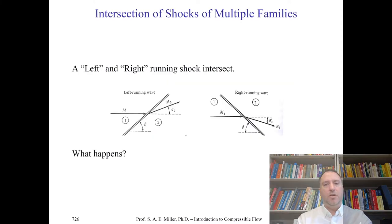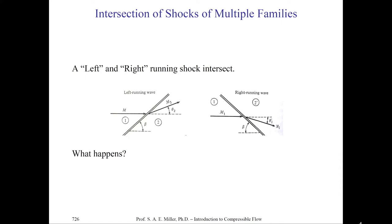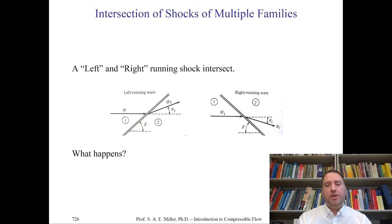Let's return and recall our definitions of left and right running shock intersections. Imagine you're a little observer looking downstream in the direction of supersonic flow. In the upper left the shock wave moves to your left — that's a left running wave. In the upper right the shock wave moves to your right — a right running wave. There's an instantaneous deflection of the streamline from m1 to m2 in both cases. The right running wave will always deflect the flow by angle theta in the right direction, and the left running wave always deflects the flow in the left direction.